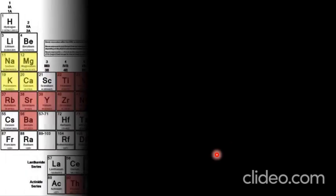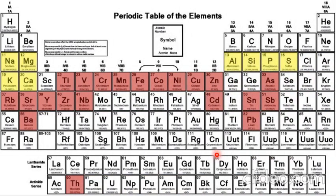X-ray fluorescence spectroscopy is a very broad technique — you can analyze the presence of nearly 90 percent of elements on the periodic table using XRF. With this technique, you can analyze elements from sodium up to uranium and palladium, making it a very diverse technique for determining the presence and elemental composition of elements in a material.